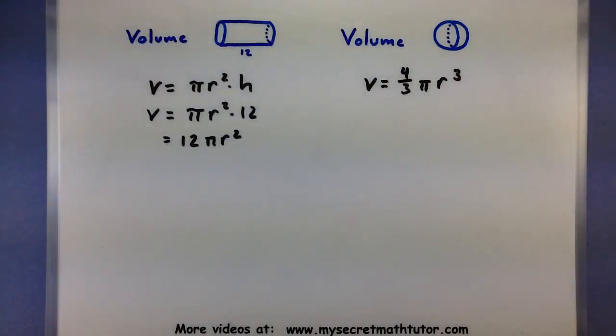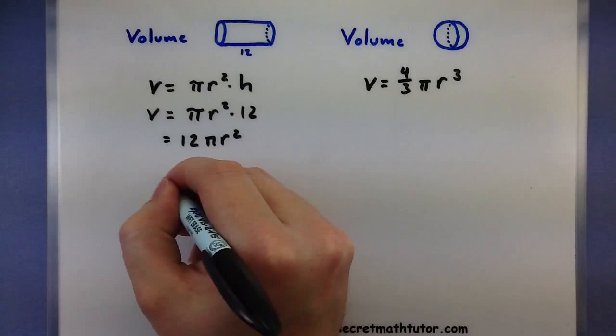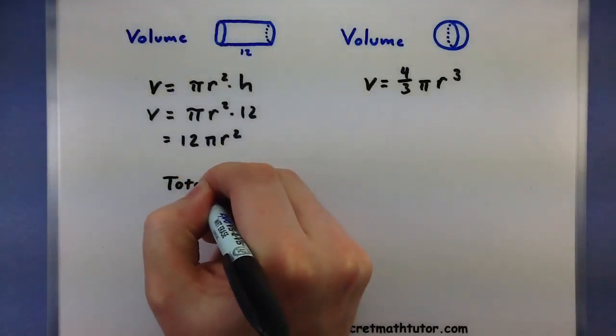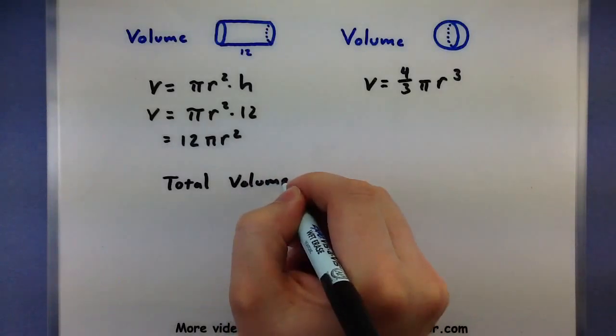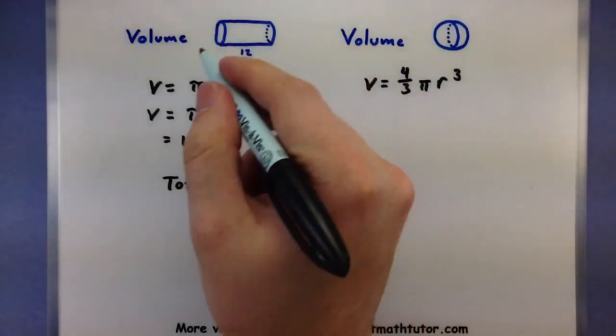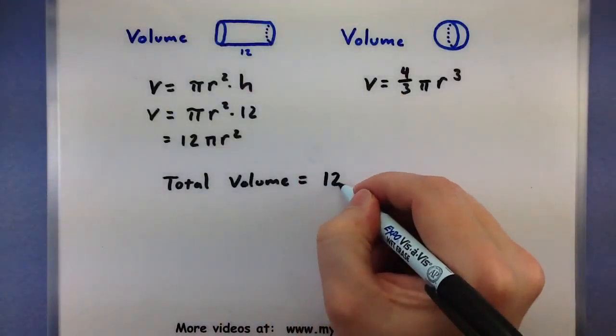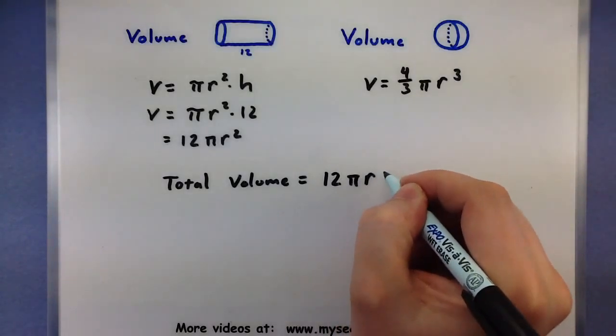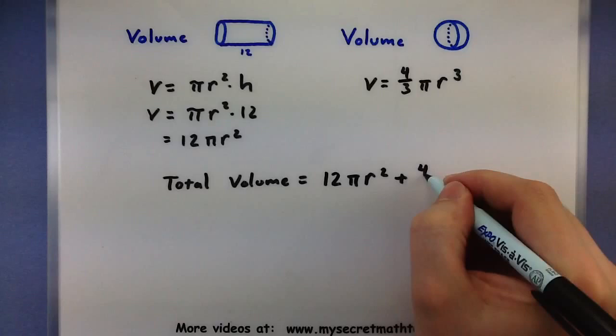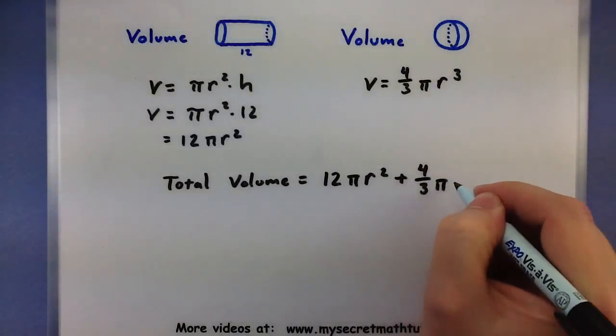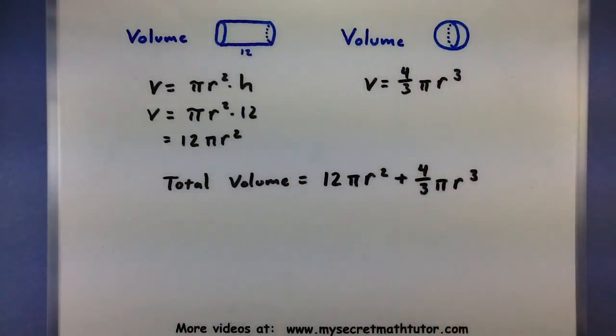So since we're building a tank out of both of these pieces, I want to look at the total volume. This will involve the cylindrical piece, 12 pi r squared, plus the 4 thirds pi r cubed.